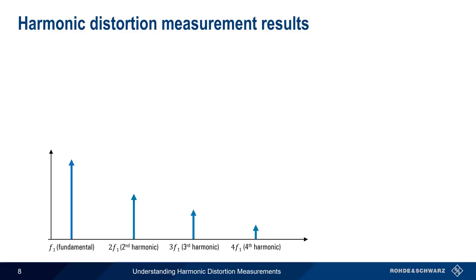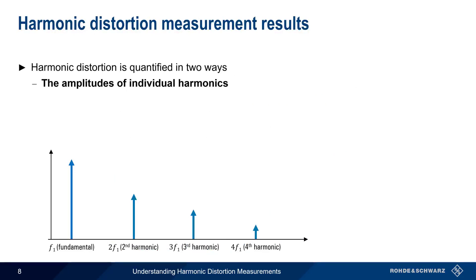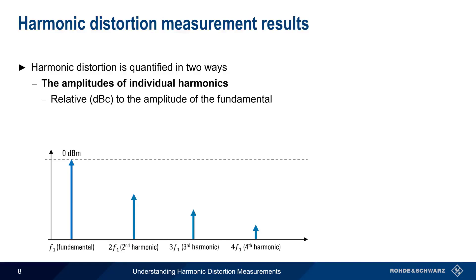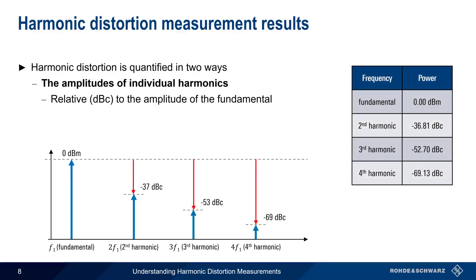Harmonic distortion measurement results are provided in two ways. The first is the amplitude of the individual harmonics, as discussed on the previous slide. These are reported as powers relative to the fundamental, so the units are typically dBc, or decibels down from the fundamental carrier. In this example, the amplitude of the fundamental is measured as an absolute power in dBm, but the power of each harmonic is reported in dBc relative to this power. This measurement data is often provided in tabular format.